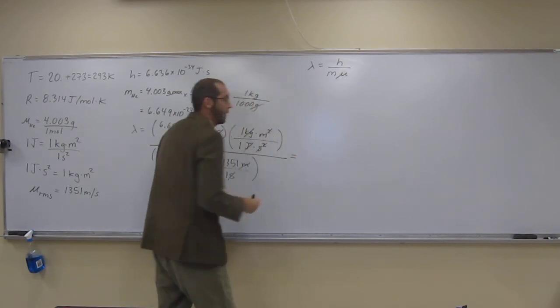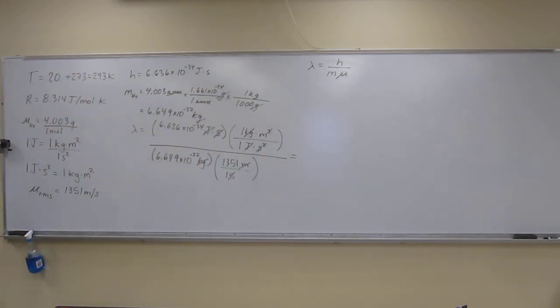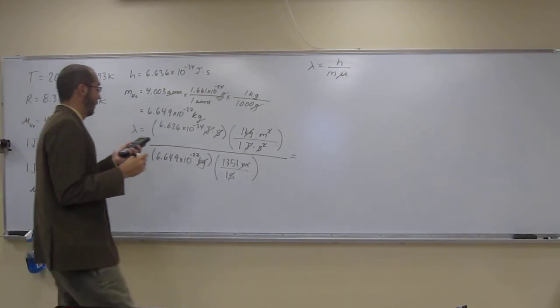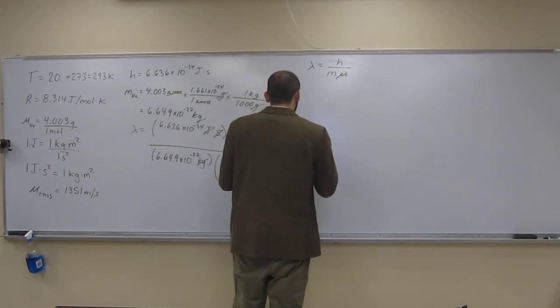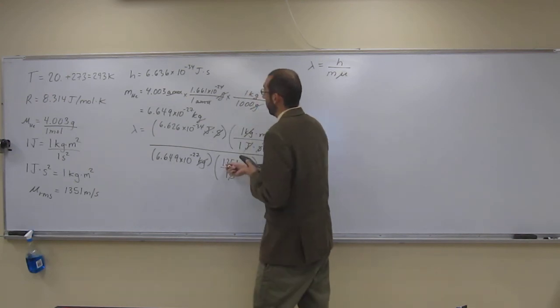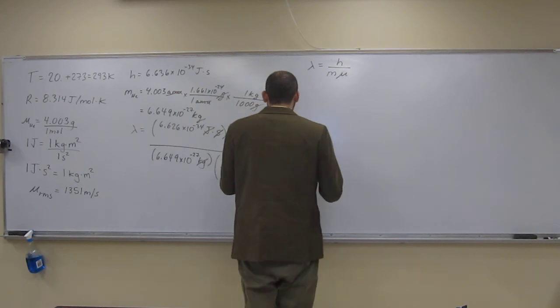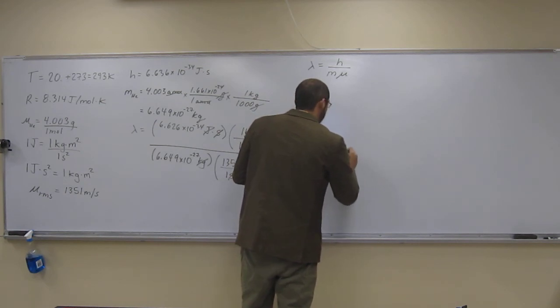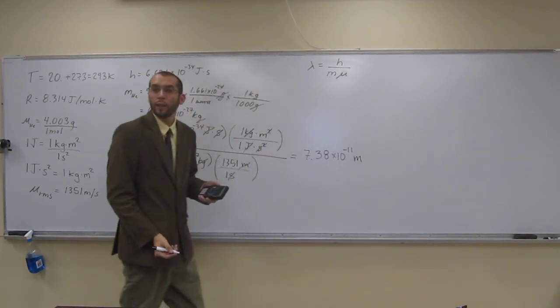So, I'm actually going to convert this into a smaller unit. More than likely, picometers, from what I can remember. So, we're gonna multiply. And then, 6.626 times 6.649... So, I get 7.38... So, remember, this was actually to the negative 11, so that's what we're going to use. 7.38 times 10 to the negative 11th meters, like that.